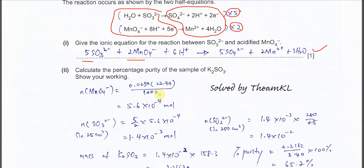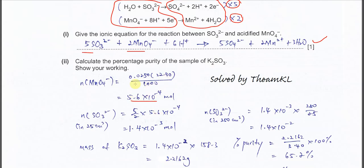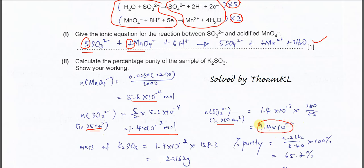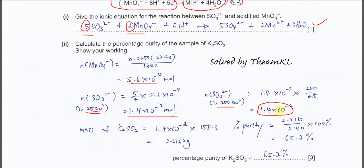Calculate the percentage purity. First, calculate the moles of permanganate ion using moles = (volume × concentration)/1000. From the 5:2 mol ratio, multiply by 5/2 to get moles of sulfide in 25 cm³, then multiply by 10 to get total moles in 250 cm³, giving 1.4 × 10⁻² mol. Multiply by the molar mass to get 2.2162 grams, then divide by the given mass of 3.4 grams and multiply by 100 to get 65.2% purity.